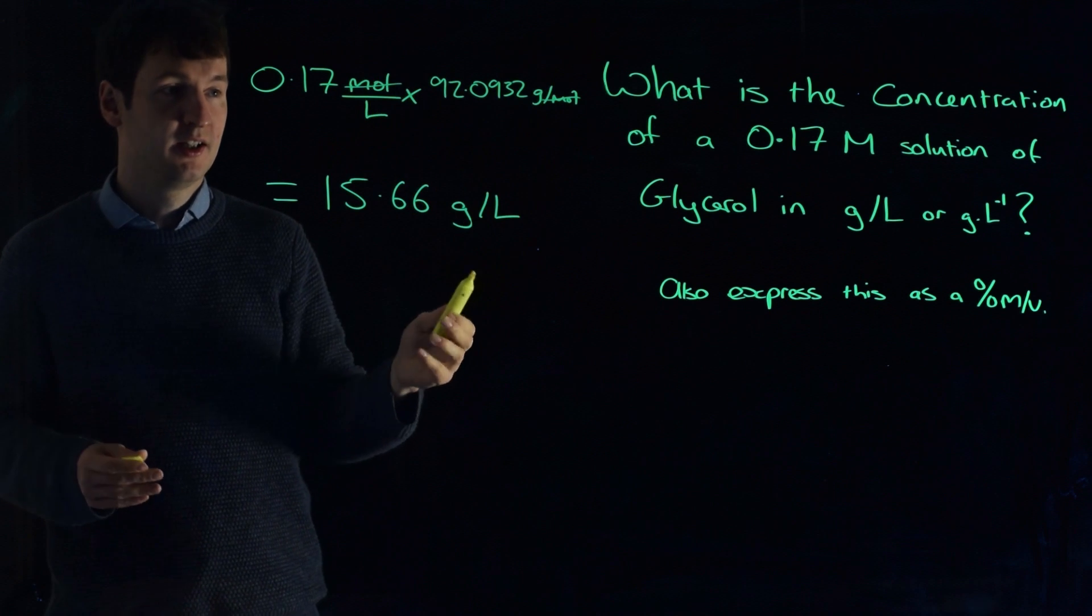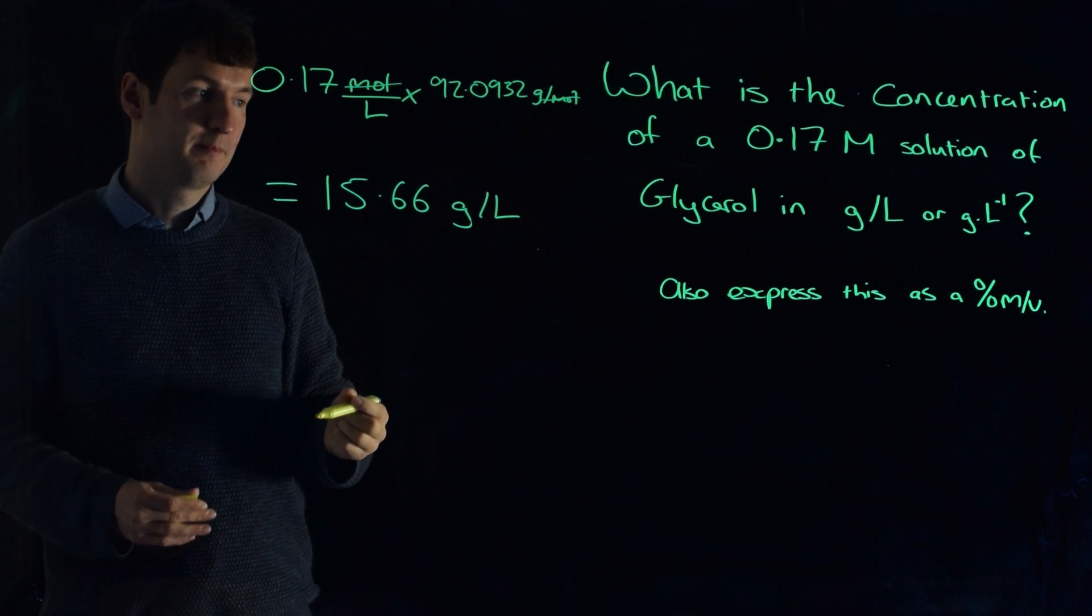Moles divided by moles is 1, which leaves you with grams per liter. Okay, that's the first part.